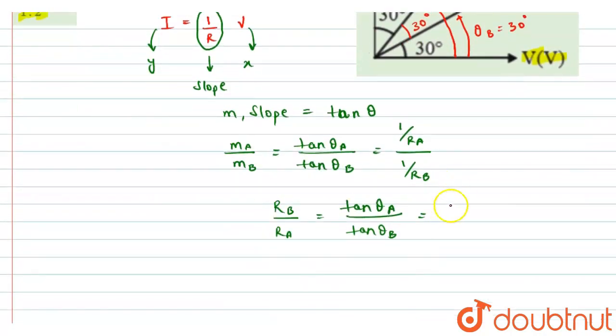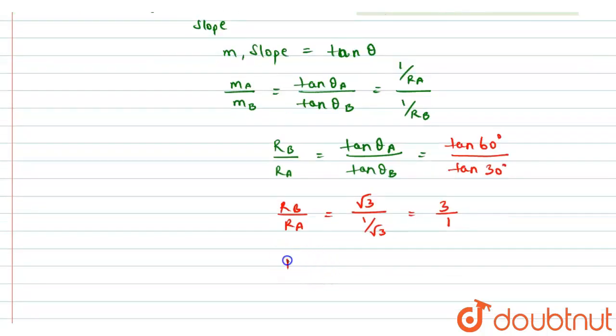So from here, we can write tan theta A must be equals to tan 60 degrees divided by tan theta B is equals to tan 30 degrees. So we will get R B over R A must be equals to tan 60 is root 3 divided by tan 30 is 1 by root 3. So we will get the ratio of 3 is to 1.